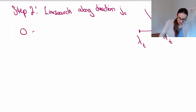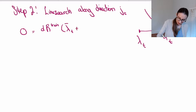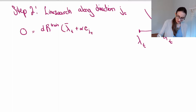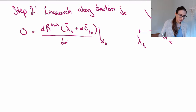We're going to take the derivative of R_train and set it equal to zero. That derivative equals zero at lambda_t plus alpha times e_{j_t}, where j_t is the direction derived in the last video. So we take d/d_alpha and set it equal to zero at the point alpha_t, which is how far we're going to go.